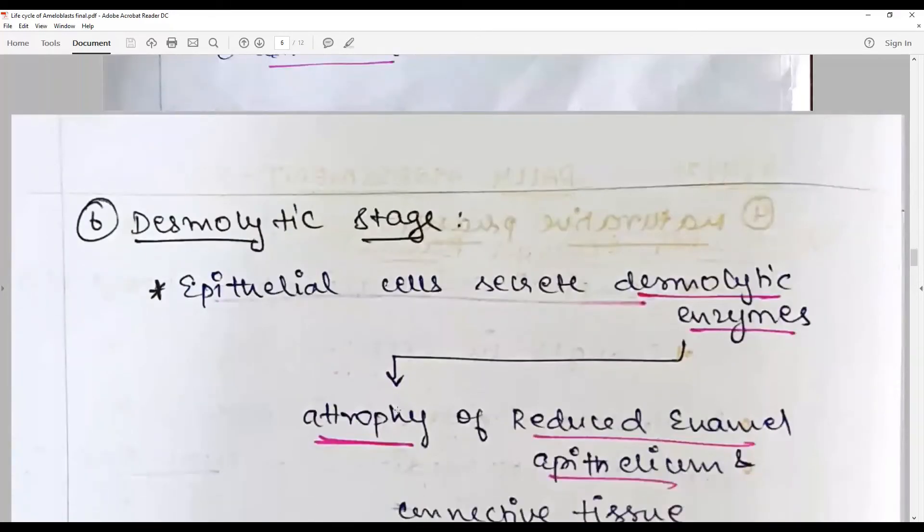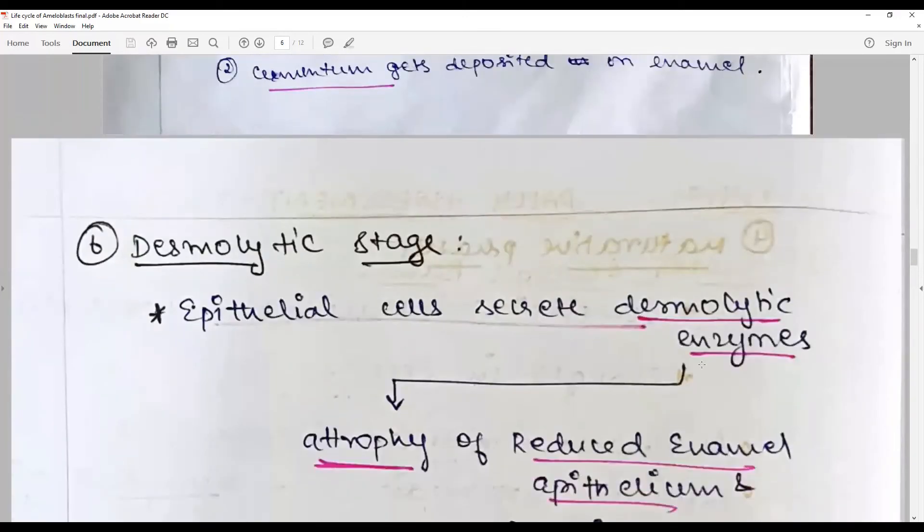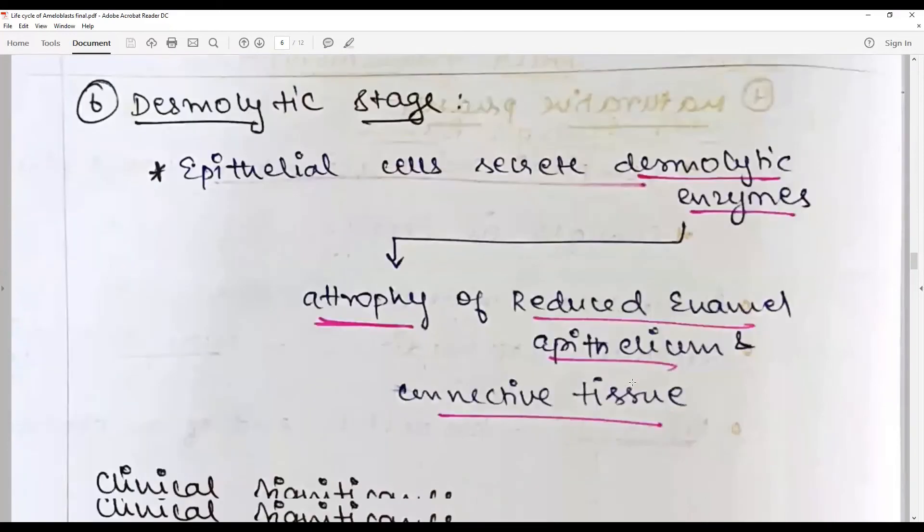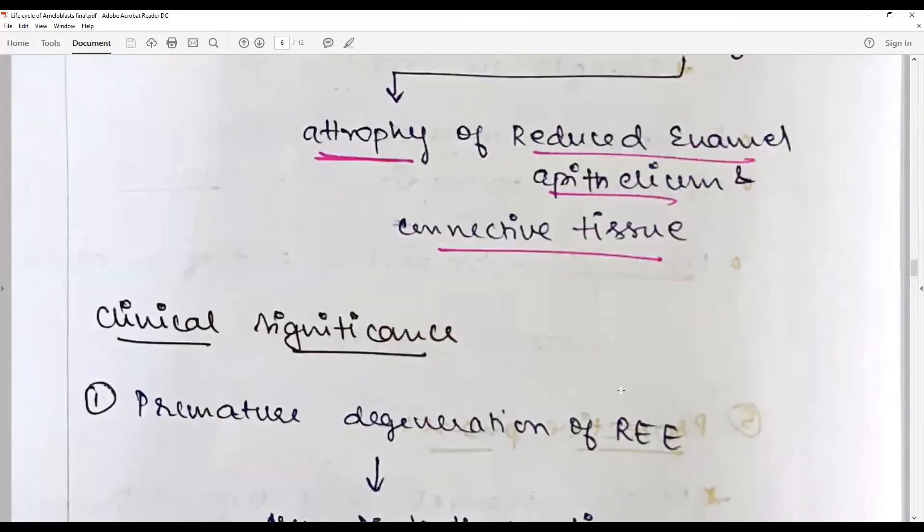Desmolytic cells: epithelial cells, that is the remnant reduced enamel epithelial cells, secrete certain enzymes called desmolytic enzymes that cause destruction of its own or the connective tissue. They also have a role to play in tooth eruption.